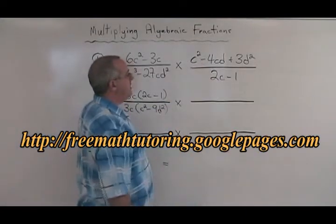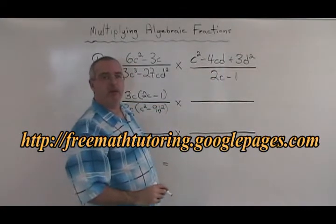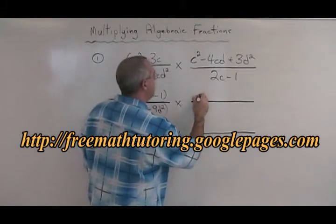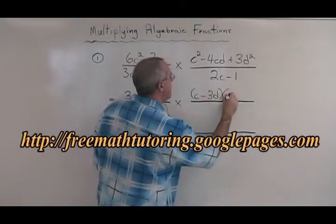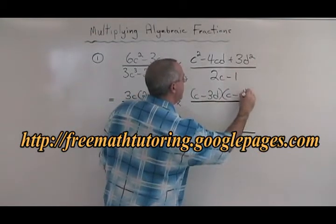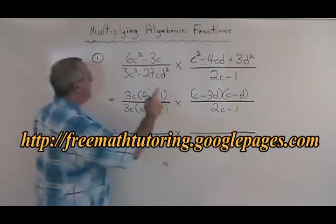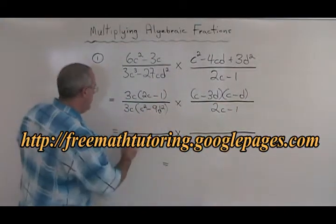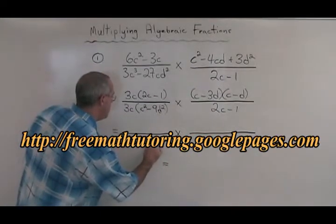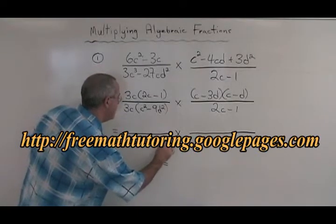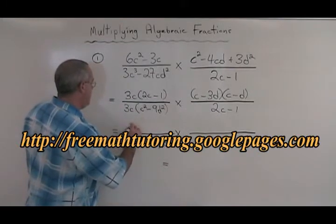Here we have a simple trinomial. What two numbers multiply to give 3 but add to give negative 4? They are negative 3 and negative 1, so we have (c minus 3d)(c minus d). The other expression is not factorable, so we just copy it down. Now let's factor our difference of squares: c squared minus 9d squared factors to (c minus 3d)(c plus 3d). The rest gets copied down.